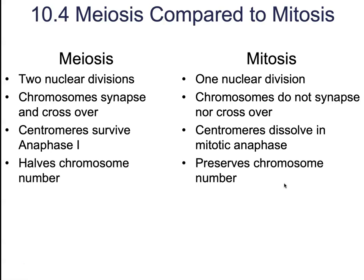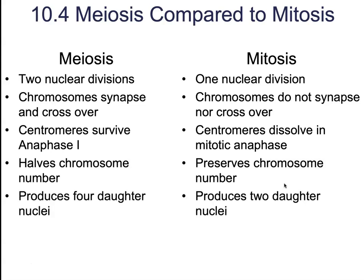Meiosis is ultimately going to halve the number of chromosomes — in other words, we're going from a diploid number to a haploid number. Whereas in mitosis, that's not the goal. In mitosis, we don't want genetic variation; we do not want the skin cells on my knee to be completely different than the skin cells found everywhere else. We want to make sure that everybody has the exact same DNA, so we're going to preserve our chromosome number and maintain the genetic reliability of the nucleus.